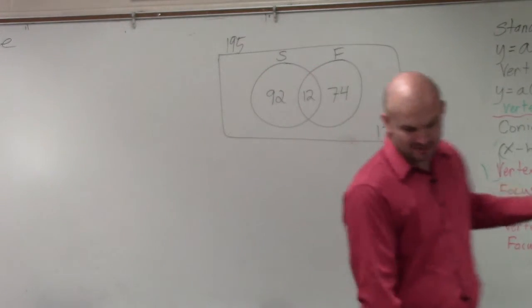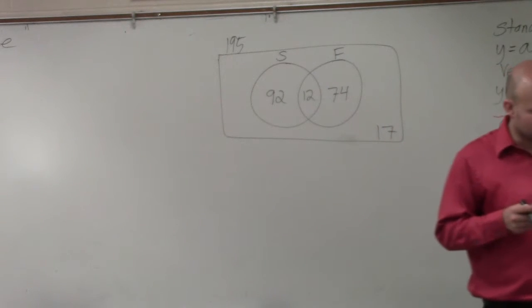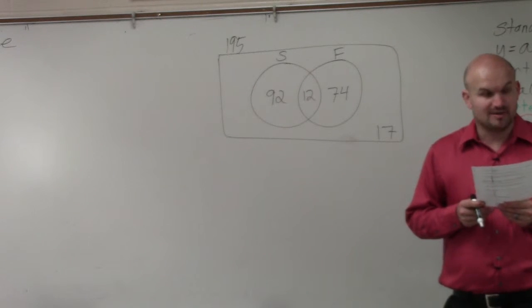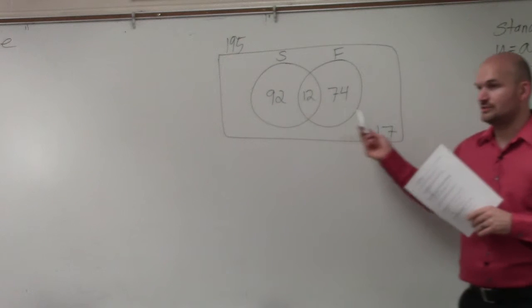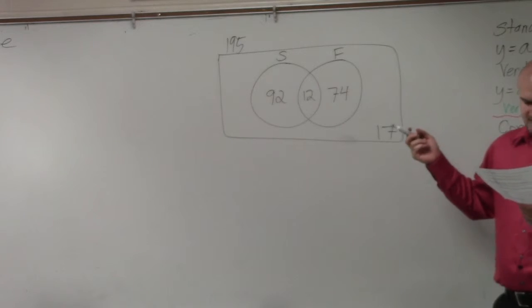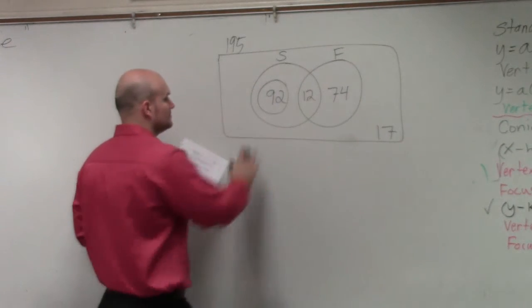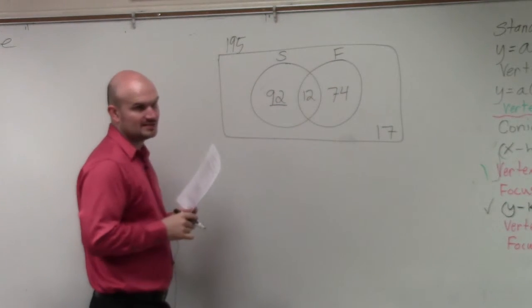So now we've created the Venn diagram. Now let's go and answer the question. What is the theoretical probability that a student chosen at random is studying Spanish but not French? So we have all these little numbers here, right? So what is the theoretical probability that a student chosen at random is studying Spanish but not French? So that's that student right there.